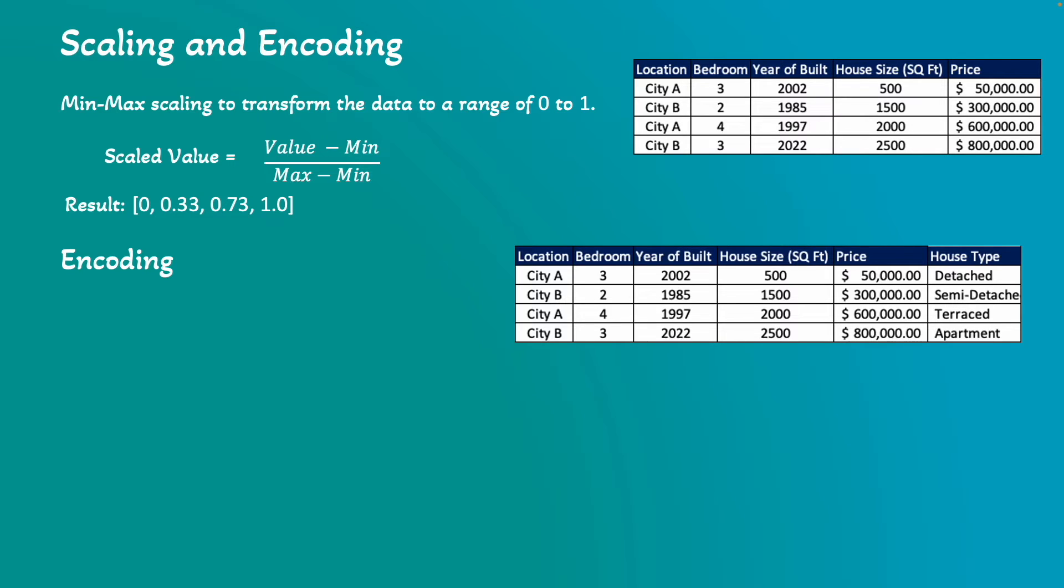Since these are non-numerical values, it may pose some ambiguity to the machine learning model during model training. To resolve this problem, we can use encoding technique to convert the text data to a numerical representation.